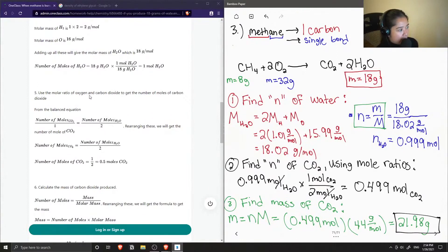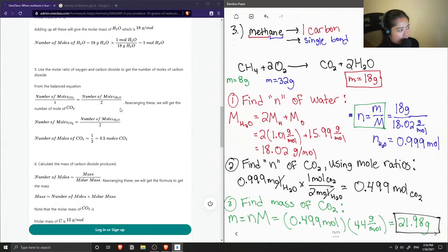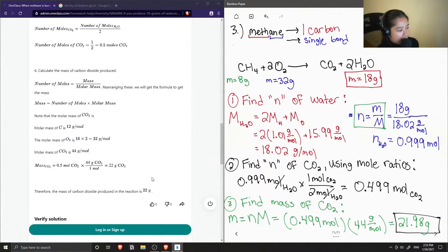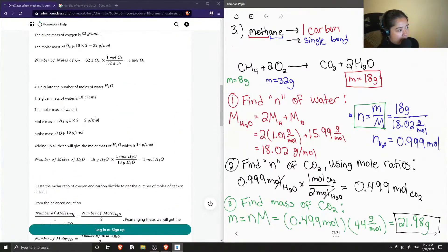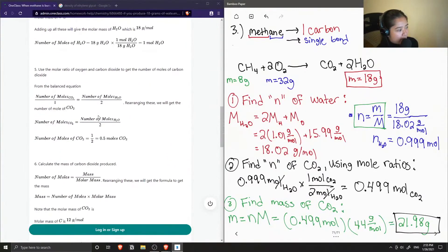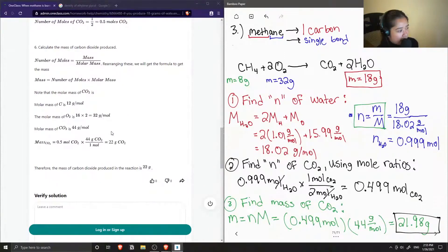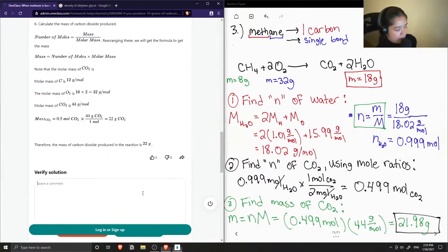Use the mole ratio of oxygen and carbon dioxide to get the number of moles of carbon dioxide. And then calculate the mass of carbon dioxide produced. So notice that they found the number of moles of both oxygen and methane, but they didn't even really use it in their final answer. They just ended up using the number of moles of water in the end. But they still ended up with the same answer of 22 grams of carbon dioxide. So the solution is correct.